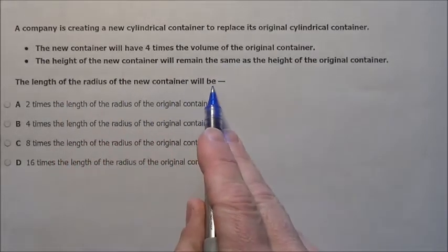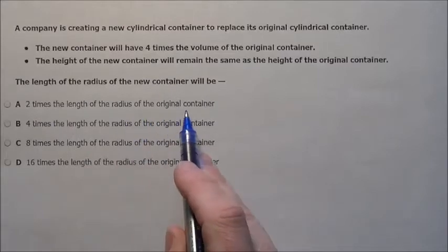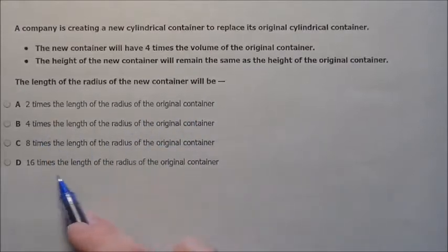So the length of the radius of the new container will be 2 times the length of the radius of the original, 4 times, 8 times, or 16 times.